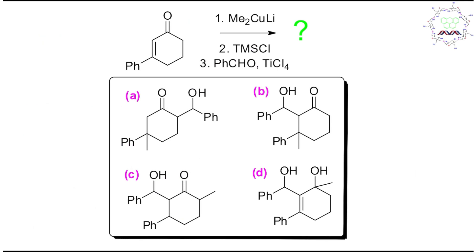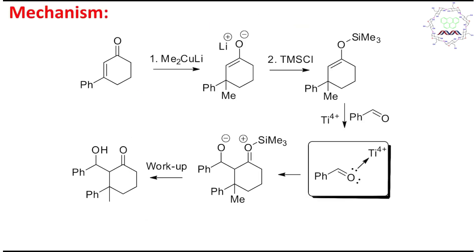I believe you have tried, so it's my turn to give you the answer. If you look at this molecule, this is actually an alpha-beta unsaturated carbonyl compound, and it is treated with three batches of reagents. Let's learn the mechanism stepwise.